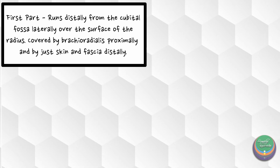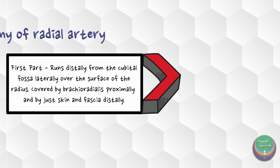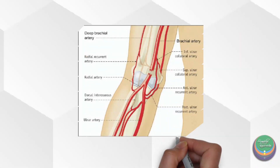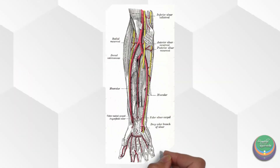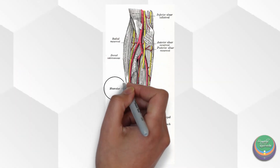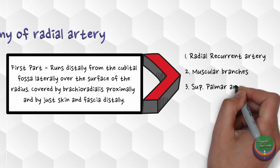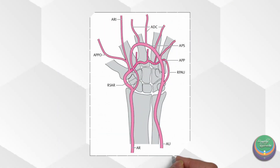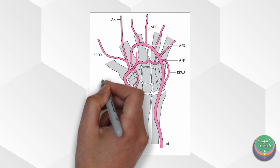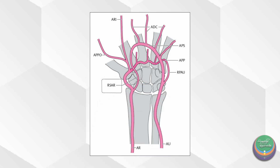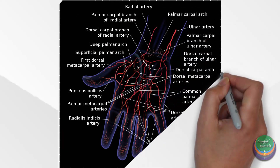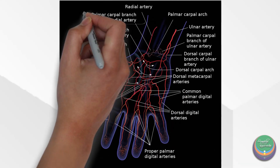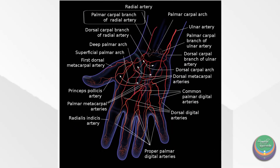This is the first part of the artery and it has the following branches: the radial recurrent artery, which arises in the cubital fossa; muscular branches to supply the various forearm muscles; the superficial palmar artery, which arises just above the wrist completing the superficial palmar arch; and the palmar carpal artery, which arises at the distal border of the pronator quadratus muscle to form the palmar carpal arch.